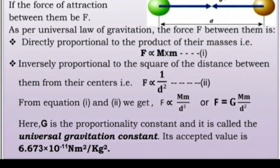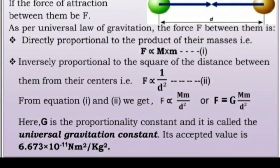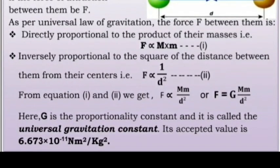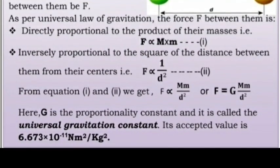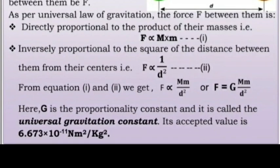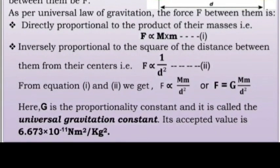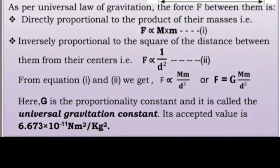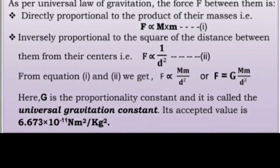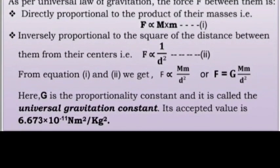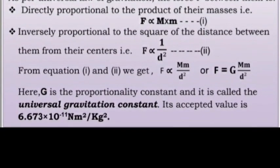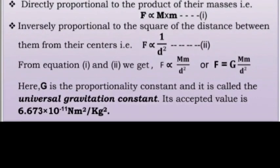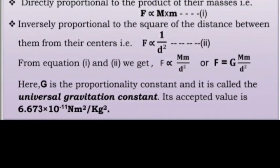Here, G is the proportionality constant and it is called the Universal Gravitational Constant. Its accepted value is 6.673 into 10 to the power minus 11 Newton metre square per kg square.